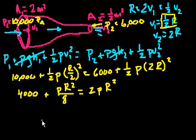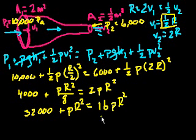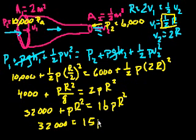See, we could multiply both sides of this equation by 8, just to get rid of this in the denominator, so we'd get 32,000 plus rho r squared is equal to 16 rho r squared. And subtract rho r squared from both sides of this equation, we get 32,000 is equal to, well this is 1 rho r squared, this is 16 rho r squared, so this is 15 rho r squared.